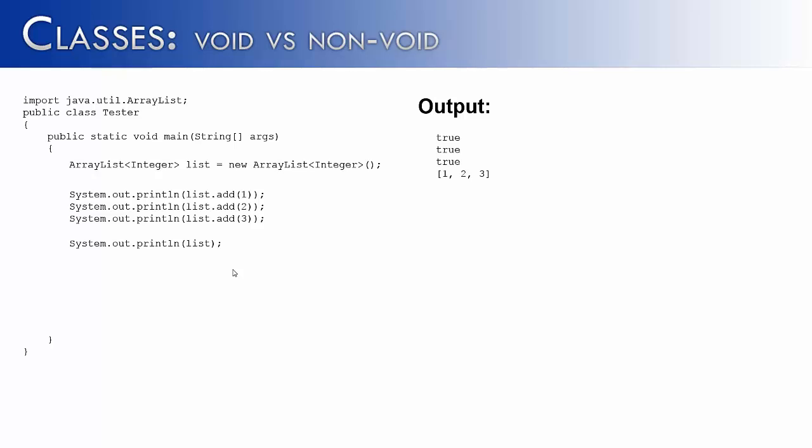But the true statements are coming from these three lines of code. Because the add method, it's actually a Boolean return method saying, yes, I have added the item to the list. So if I wanted to see whether the item was added or not, I could use it in a system.out.println statement.